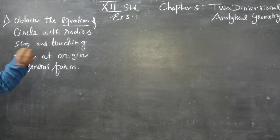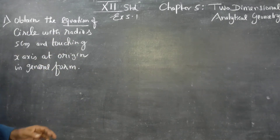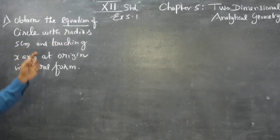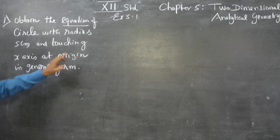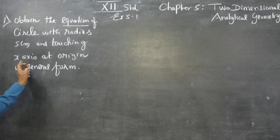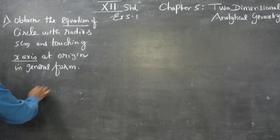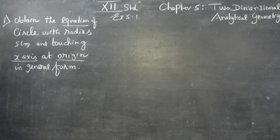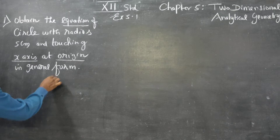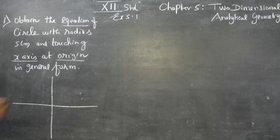The given criteria are: radius 5 cm is one piece of information, and the second information is that the circle is touching the x-axis at the origin. With these two pieces of information, we can draw a simple diagram.